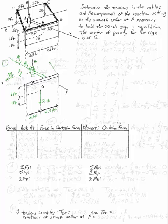In addition to the weight and these four reaction components, we also need the tensions in the cables, which I'll call TBC and TDE. TBC goes from B to C, and TDE goes from D to E. I'm also going to label the distance along the pipe back toward A, and the two distances of three feet and two feet on the sign.